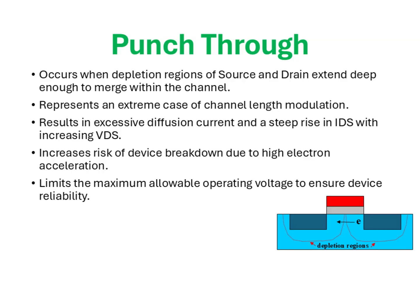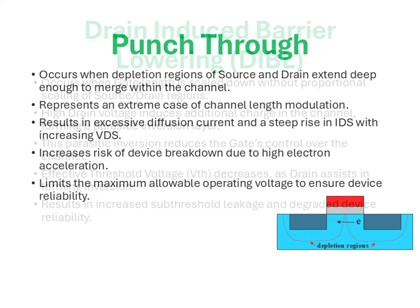To mitigate punch-through, advanced device engineering techniques are employed, such as channel engineering with retrograde wells, lightly doped drain extensions, and using high-k dielectrics combined with metal gates to improve electrostatic control. In FinFETs and gate-all-around structures, the improved gate control significantly suppresses punch-through, which is one of the key reasons why such non-planar devices have become dominant at technology nodes below 20 nanometers. Punch-through essentially represents the point where electrostatic control is completely lost, marking a critical limitation in MOSFET scaling.